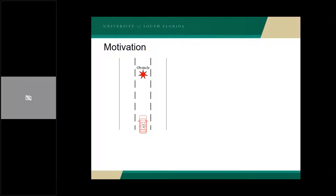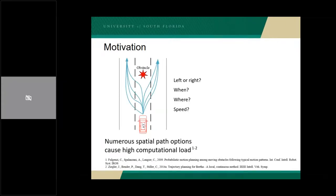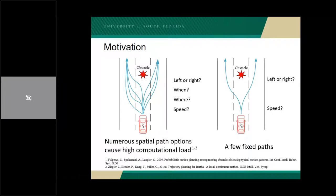For example, pass the obstacle from the left side or right side, when to make the lane change, where to make the lane change, and the speed planning along the path. There are so many options for the AVA, and this causes high computational load to generate the trajectory. An AVA may not need to have so many options. Instead, the path of the AVA is fixed or limited to a few options most of the time.